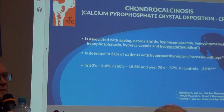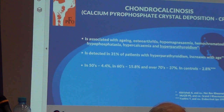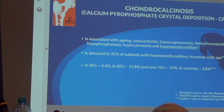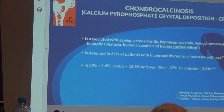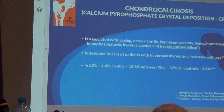The first and most common symptom is chondrocalcinosis. It normally occurs in association with aging, osteoarthritis, hypomagnesemia, hemochromatosis, hyperphosphatasia, hypercalcemia, and hyperparathyroidism. It is detected in 31% of patients with hyperparathyroidism and increases with age. At age 50, it occurs in more than 4%; in the 60s, more than 50%; and over 70s, 37%. In comparison to controls, it is only 2.8%.